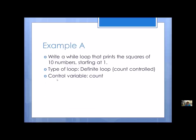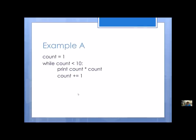This also helps us with the control variable — it's going to be count because it's count-controlled. When is it going to stop? Not at ten, because I'm starting at one and the last number is never included. So if the count is less than eleven, that gets me up to ten. Alternatively, I could say count less than or equal to ten — either works. So less than eleven or less than or equal to ten. This is what the loop would actually look like. Can you identify the condition and the control variable? The control variable also needs to be initialized.